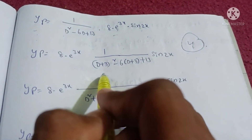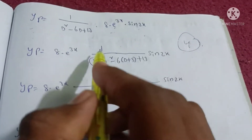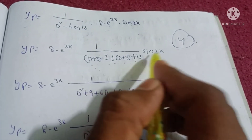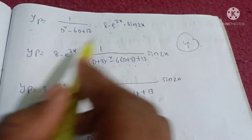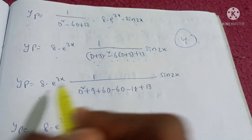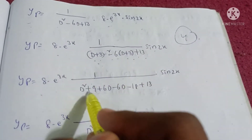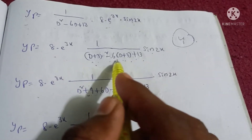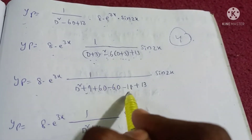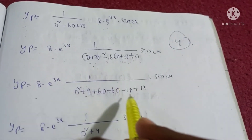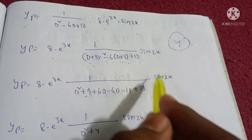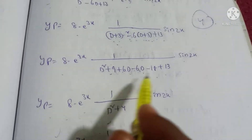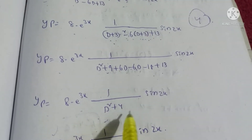In the fourth method, D is replaced by D plus a. So we get e^(3x) times 1 divided by (D plus 3)² minus 6(D plus 3) plus 13, applied to sin(2x). Expanding: e^(3x) times 1 divided by D² plus 6D plus 9 minus 6D minus 18 plus 13, applied to sin(2x). This simplifies to 8·e^(3x) times 1 divided by (D² plus 4), applied to sin(2x).